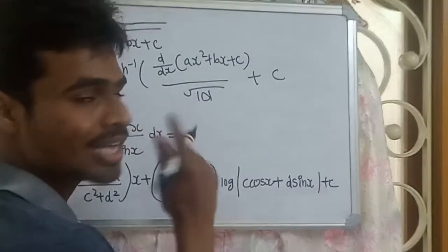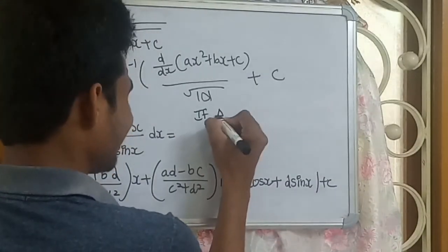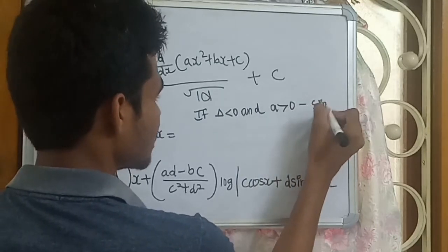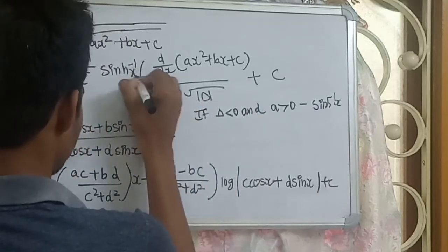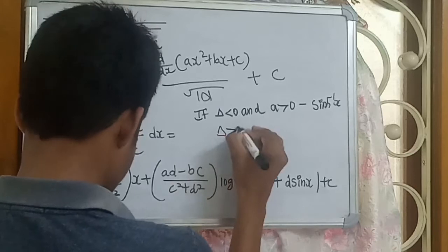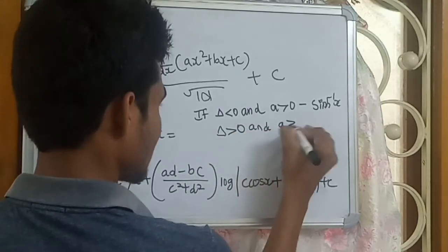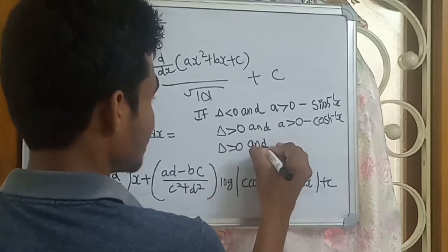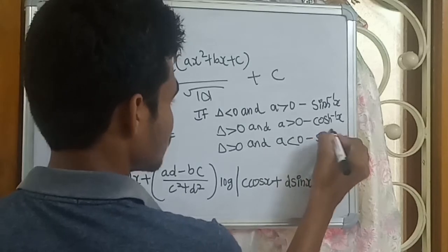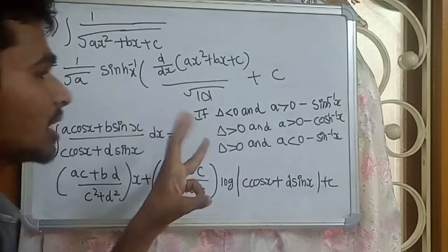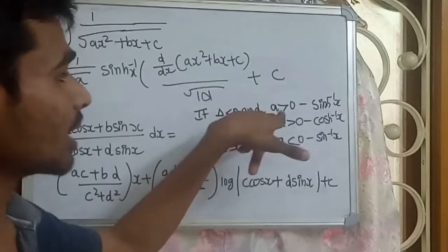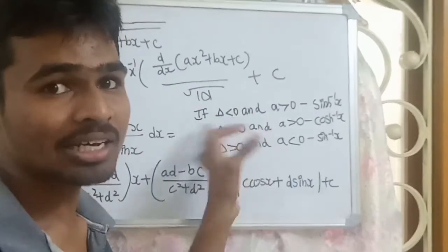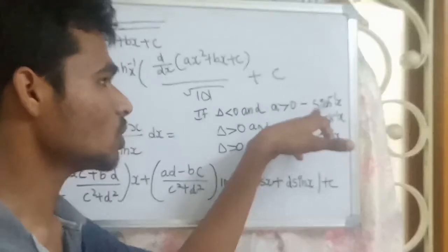For this formula, there are 4 conditions: if delta is greater than zero and A is greater than zero, the sinh inverse section applies. Also, if delta is less than zero and A is greater than zero, a different relation applies.